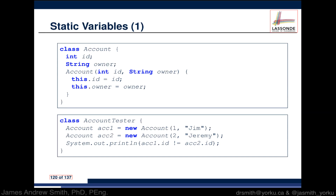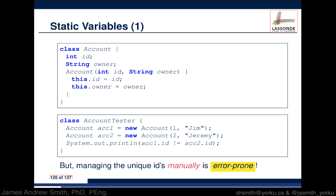We're going to have an AccountTester class that uses Account. We'll have acc1 and acc2, both objects of type Account. The first account, acc1, will have an ID of 1 and an owner's name of Jim. The second account will have an ID of 2 and a name of Jeremy. We do a print line to make sure that the IDs are different, because it's important that these accounts don't get mixed up.